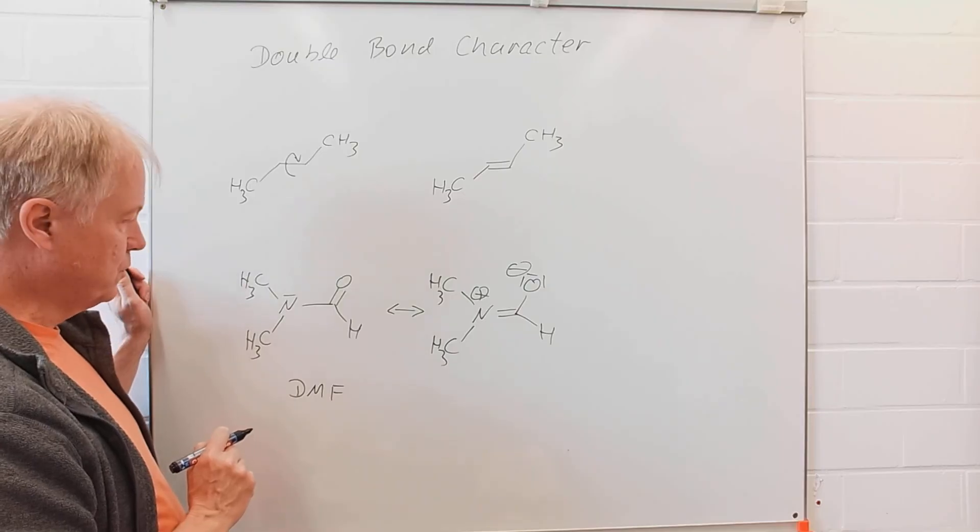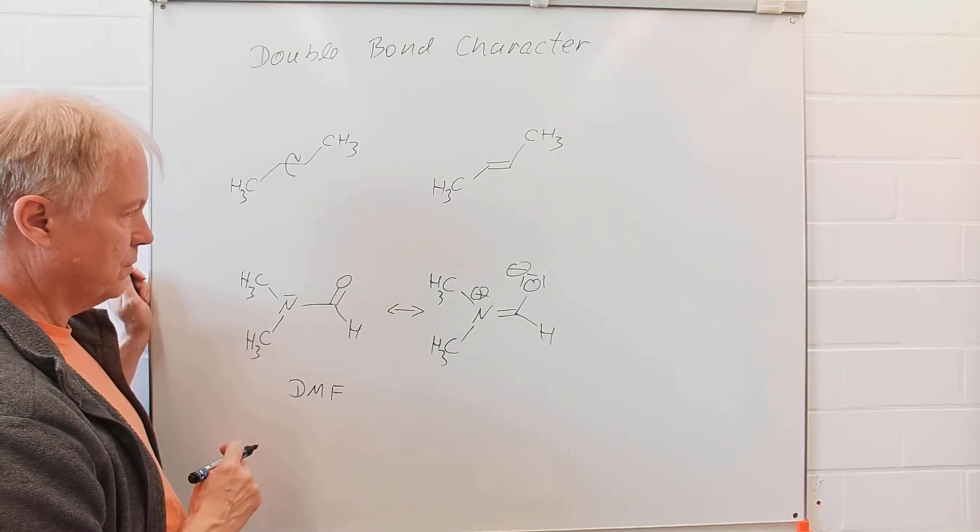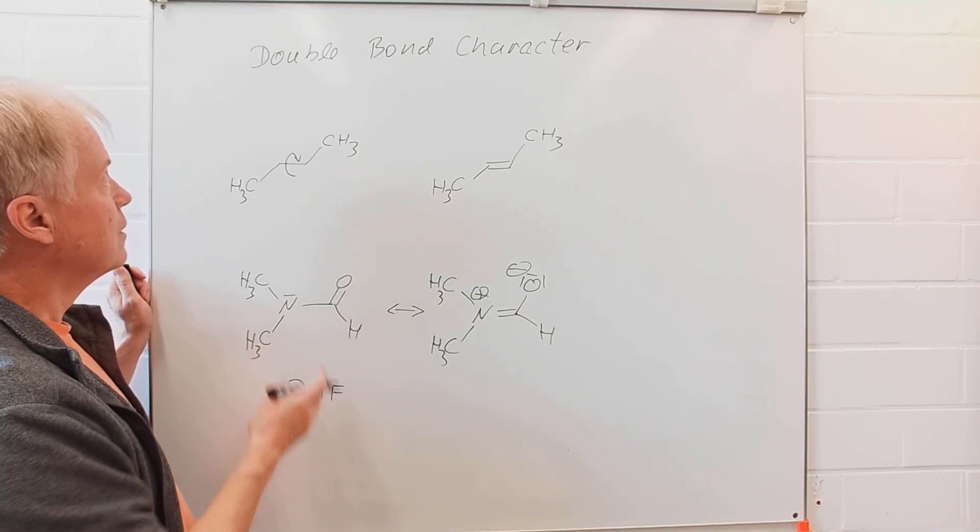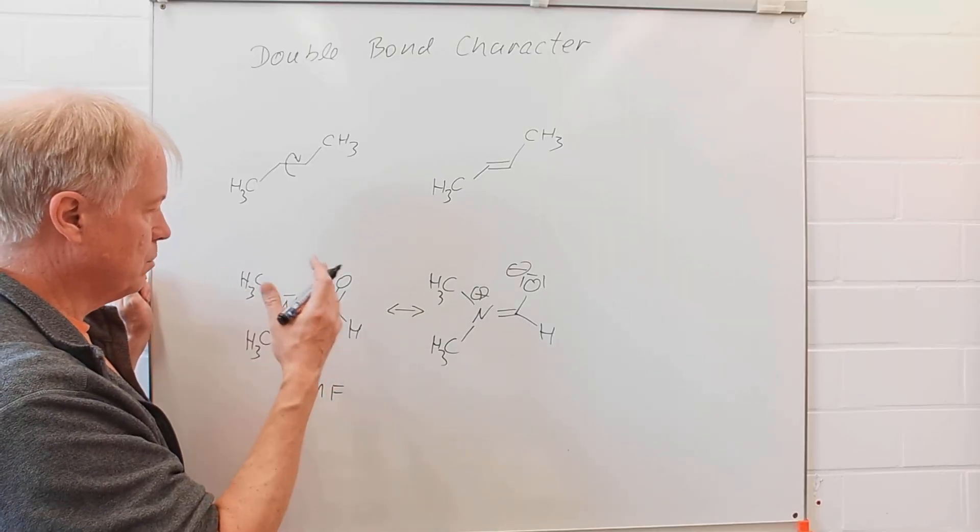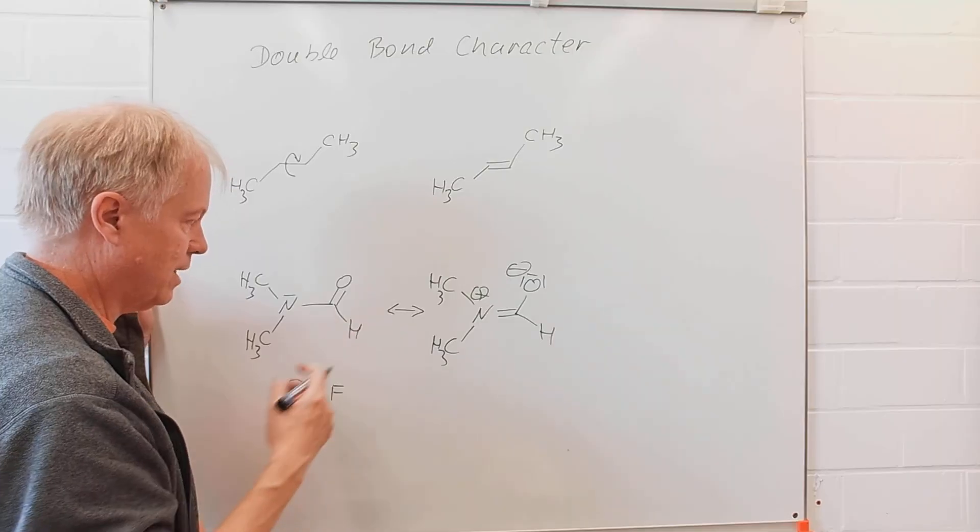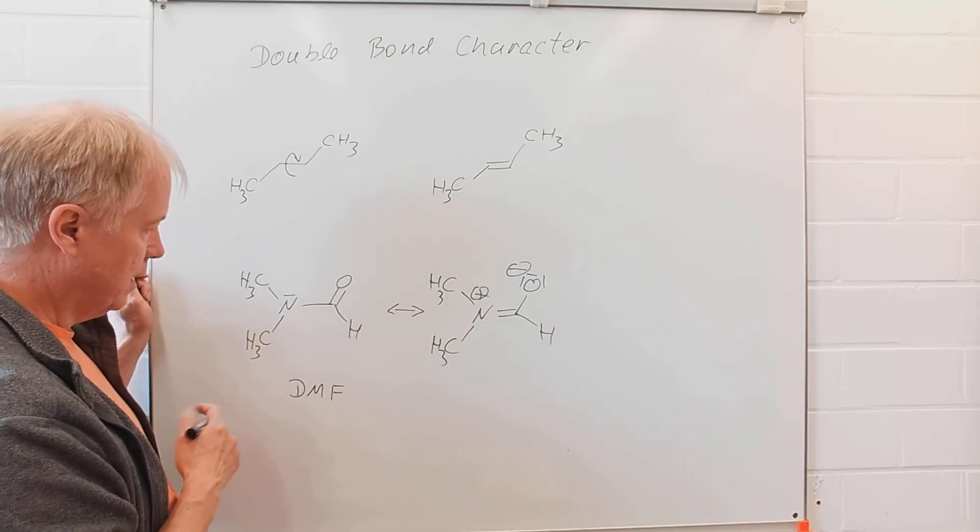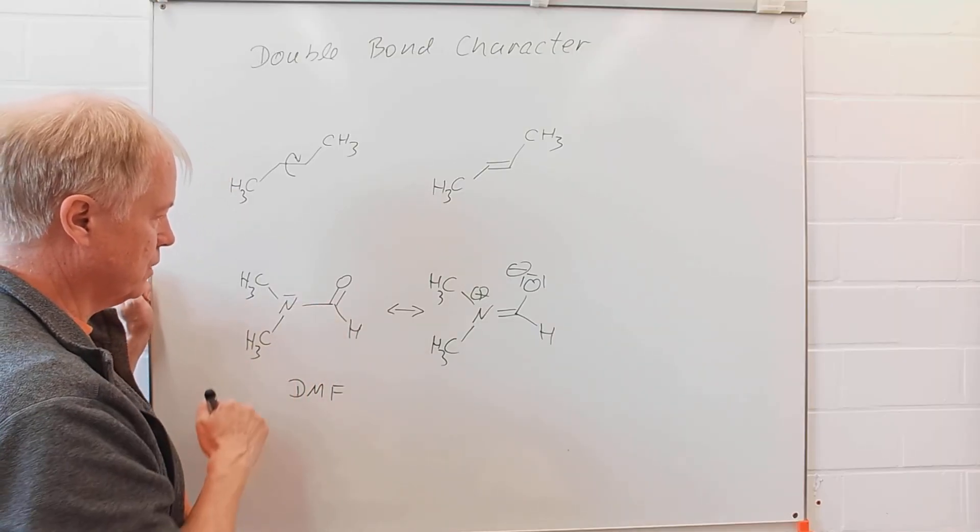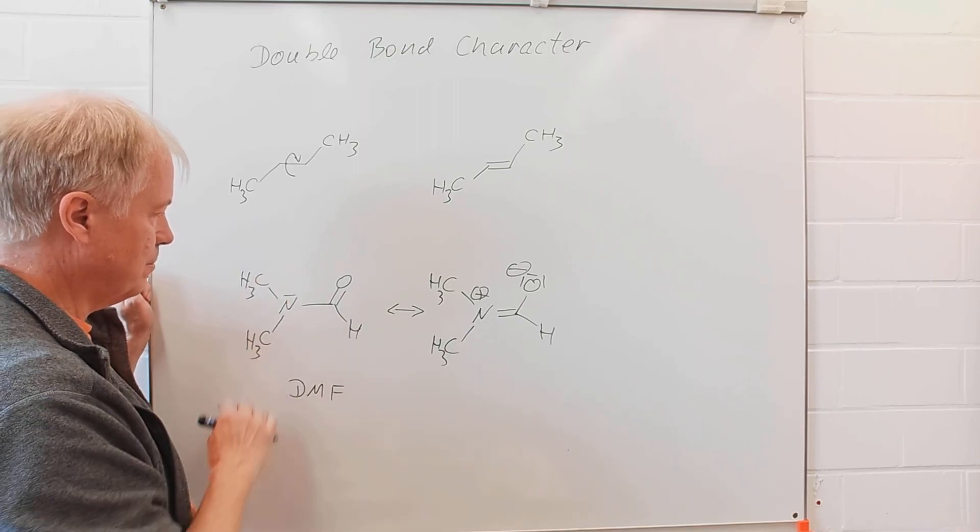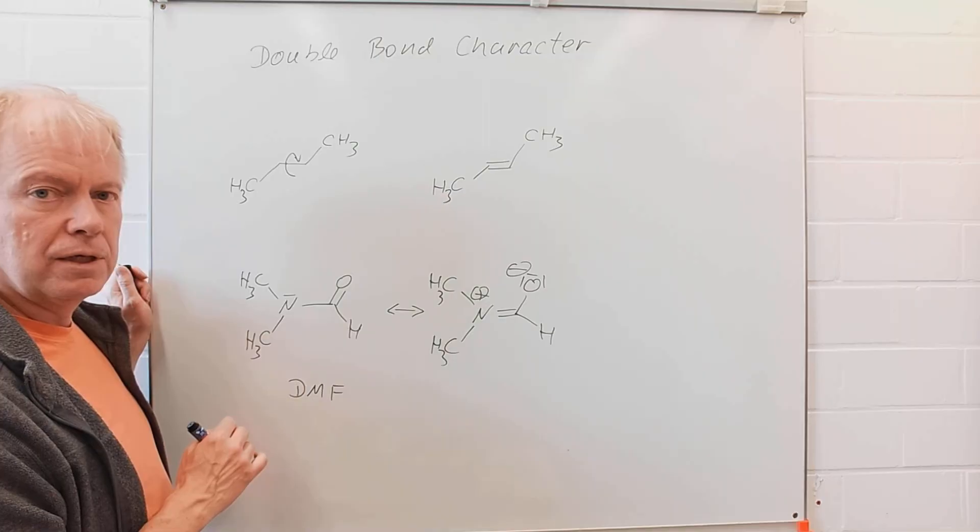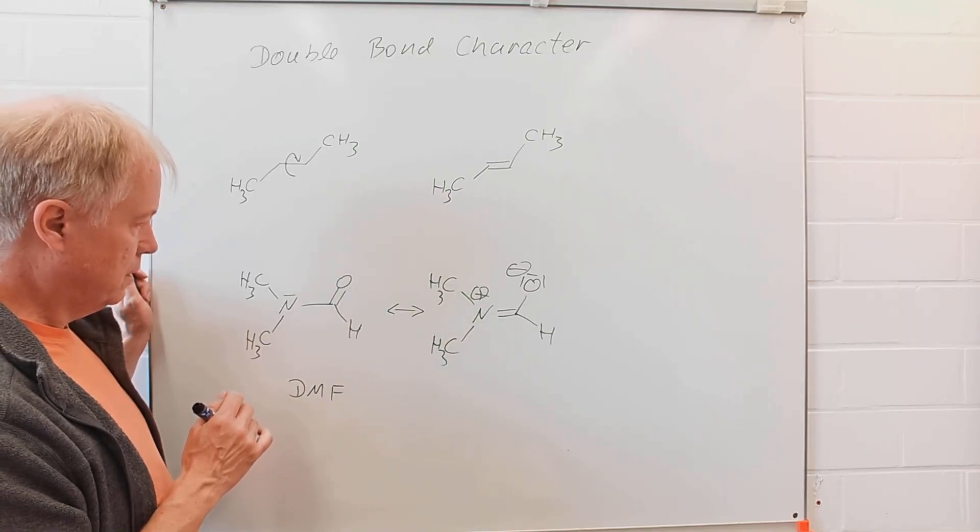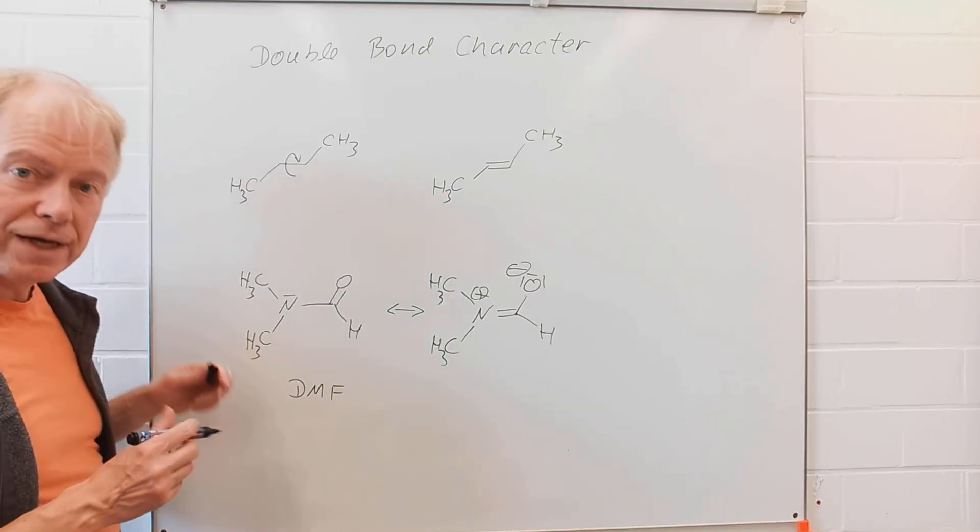This is a very nice example of double bond character—partial double bond character. Since this is a carboxylic amide, these types of partial double bonds are very important in biochemistry. Thanks for listening.